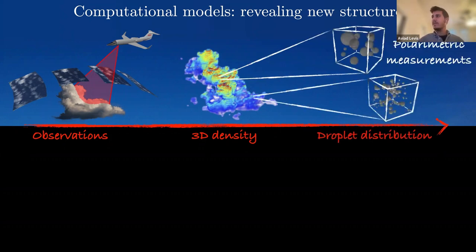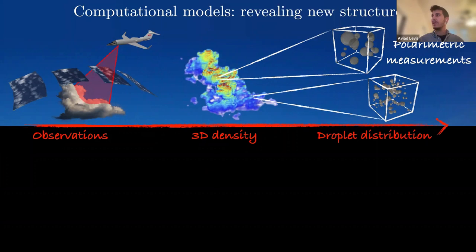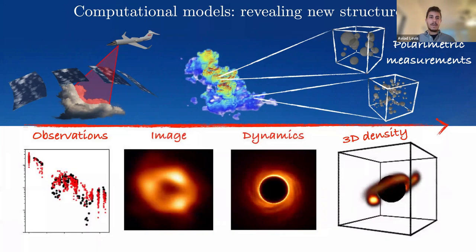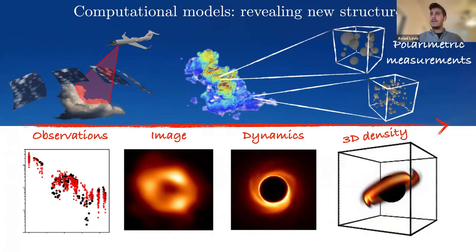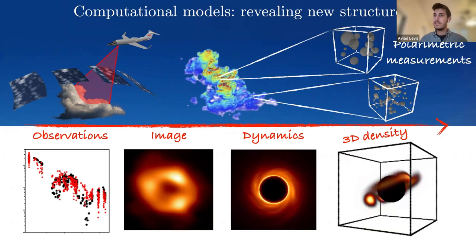We peeled off another layer of the onion and modeled how polarization — a vector property of light — is impacted by scattering within the cloud. This lets us learn not just about the densities but also the sizes: in one part of the cloud the droplets are bigger, in another the distribution is smaller. Taking the same approach into black hole observation, the Event Horizon Telescope takes unstructured interferometric observations and produces an image — here I'm showing the image of Sagittarius A*, the black hole in the center of our galaxy.